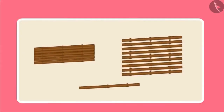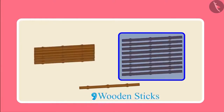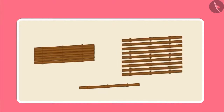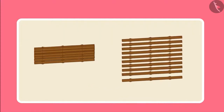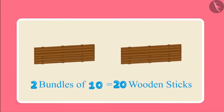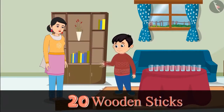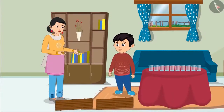So Chotu, as soon as we have 10 objects, we make their bundle and count open objects till 9. As soon as we get another wooden stick after 19, we make another bundle of 10, which gives us 2 bundles of 10. That means I got 20 wooden sticks. Yes Chotu, you are absolutely correct.